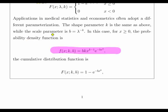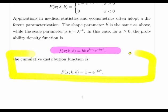But what we're really interested in is the cumulative distribution function, because this is what we use in random number generation. And that is equal to 1 minus the exponential of minus b times x to the power of k.